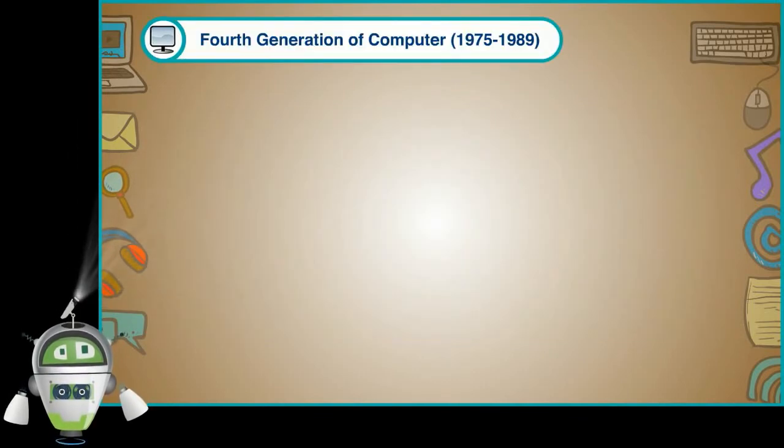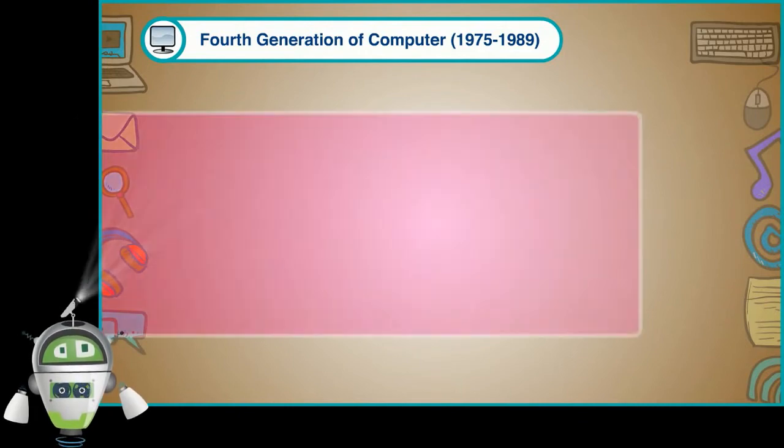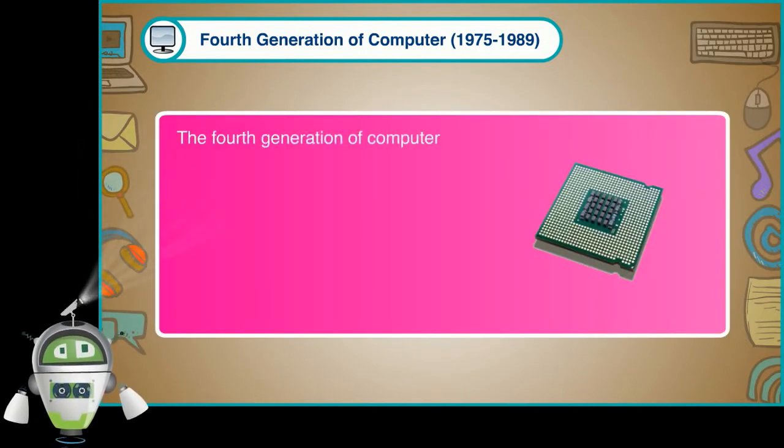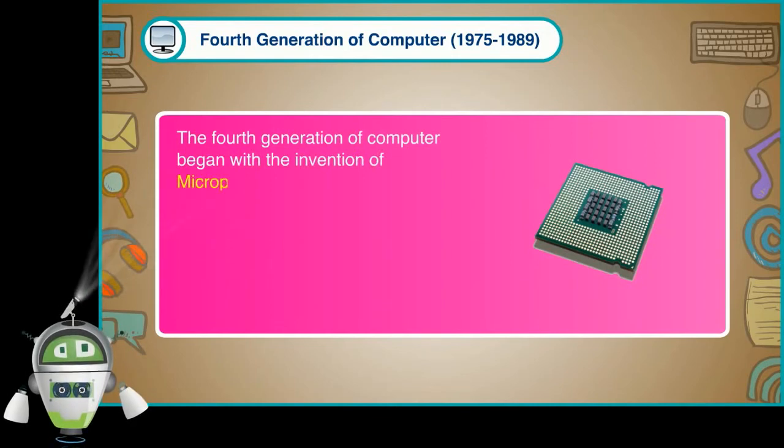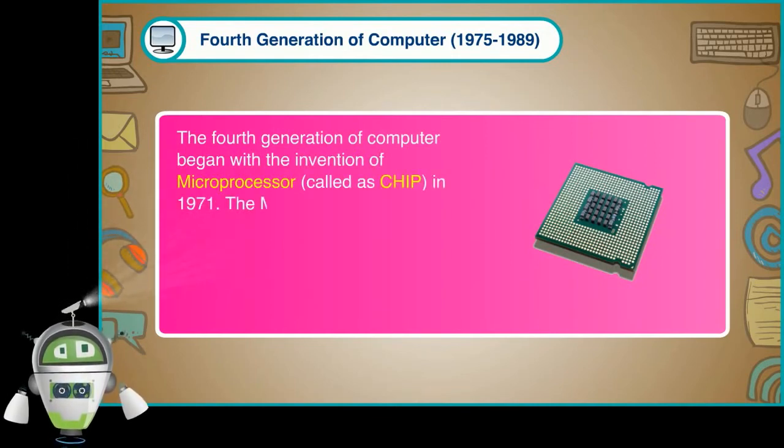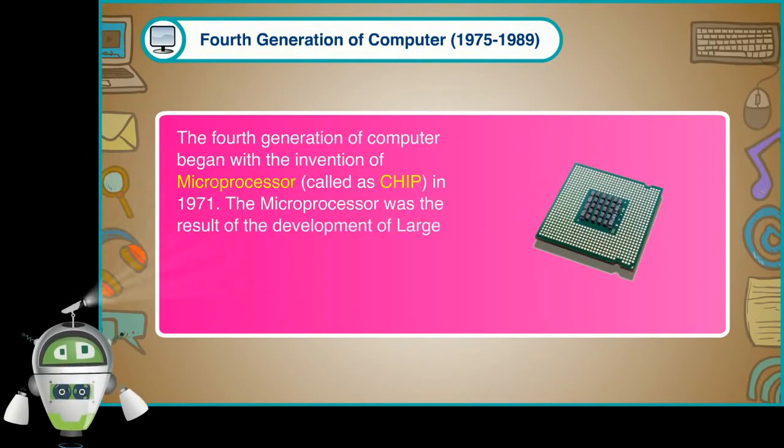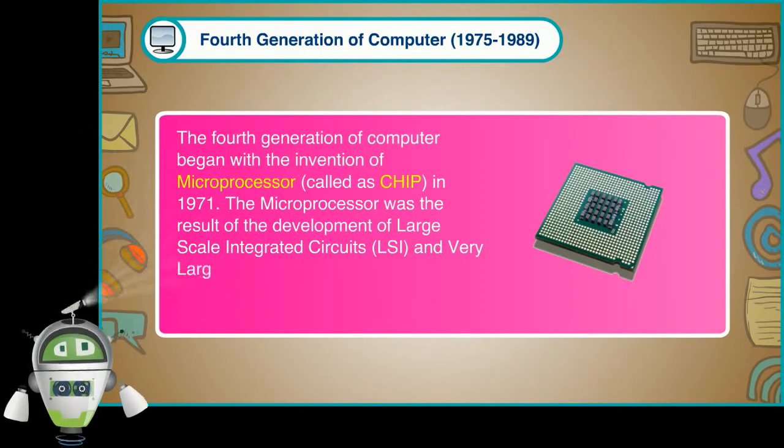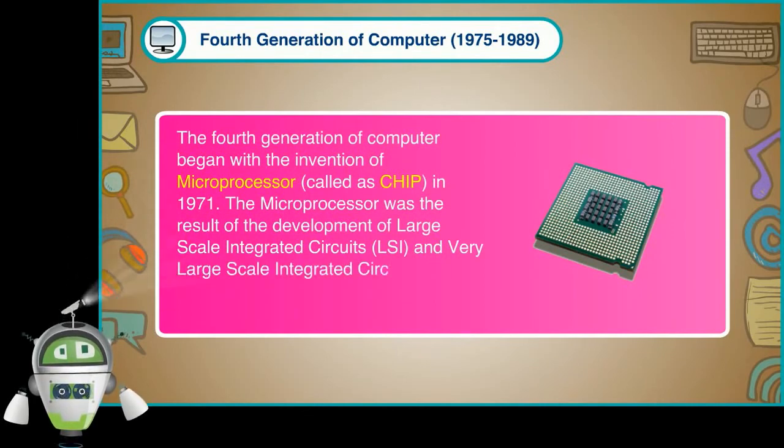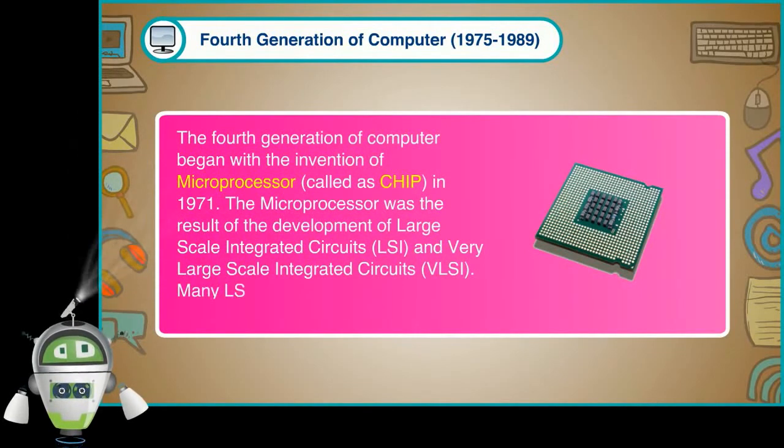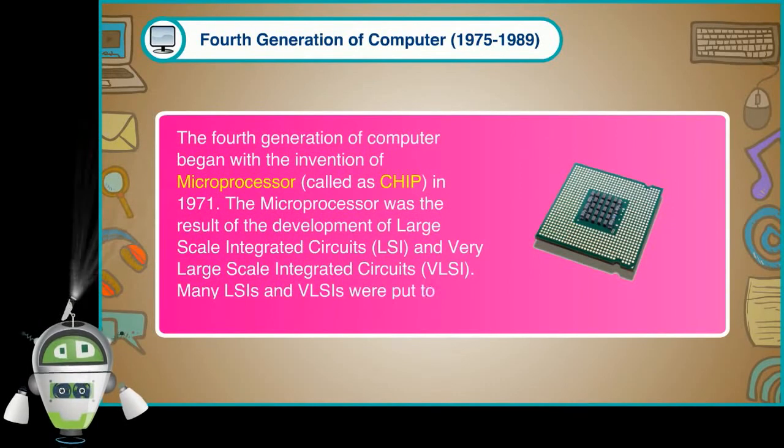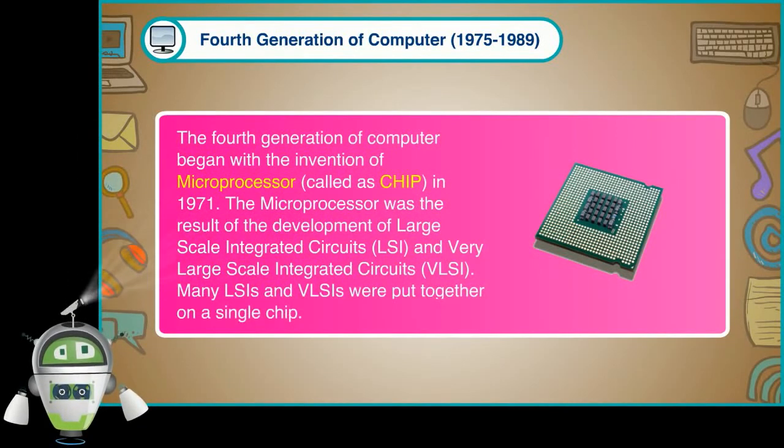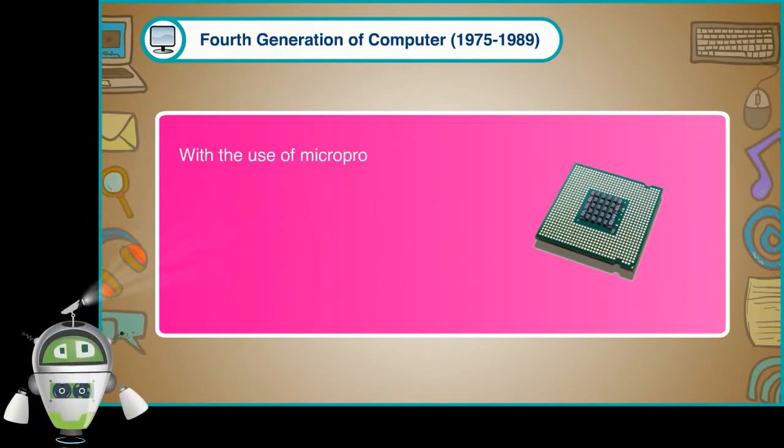Fourth Generation of Computer 1975-1989. The fourth generation of computer began with the invention of microprocessor, called as chip, in 1971. The microprocessor was the result of the development of large-scale integrated circuits, LSI, and very large-scale integrated circuits, VLSI. Many LSIs and VLSIs were put together on a single chip.